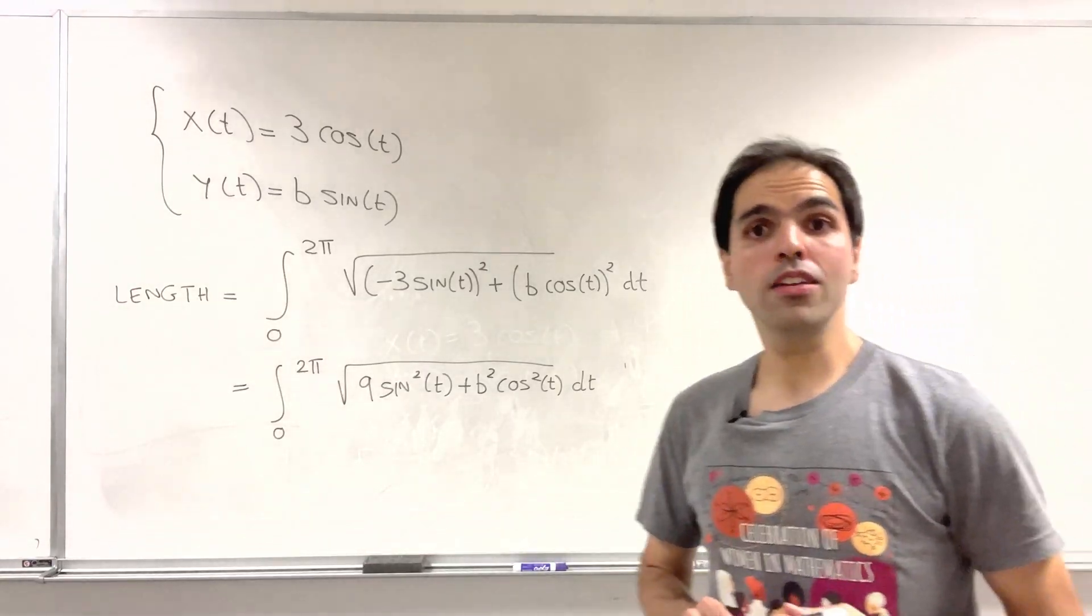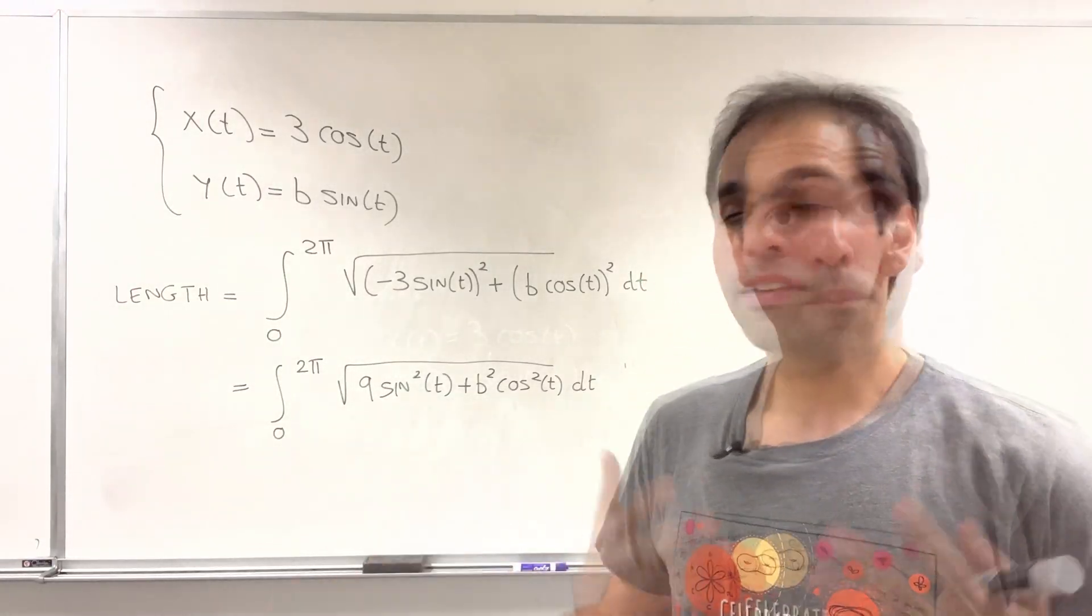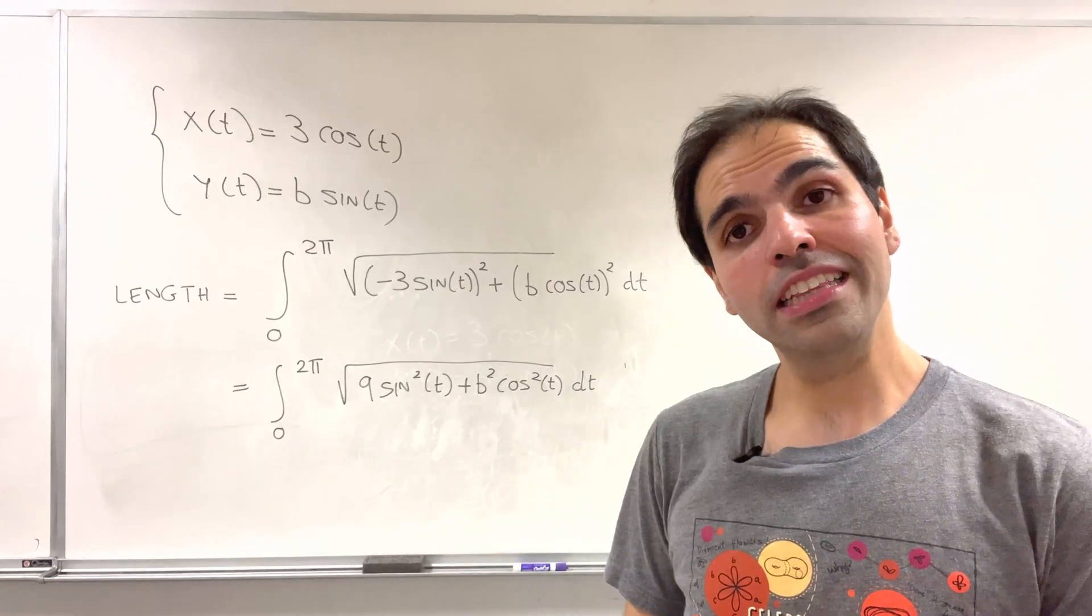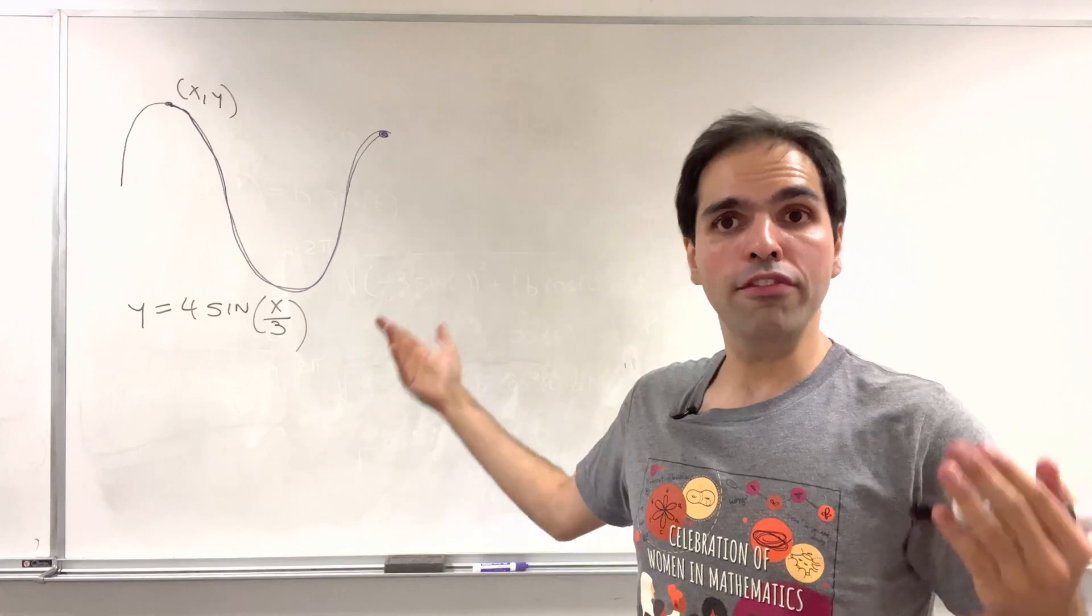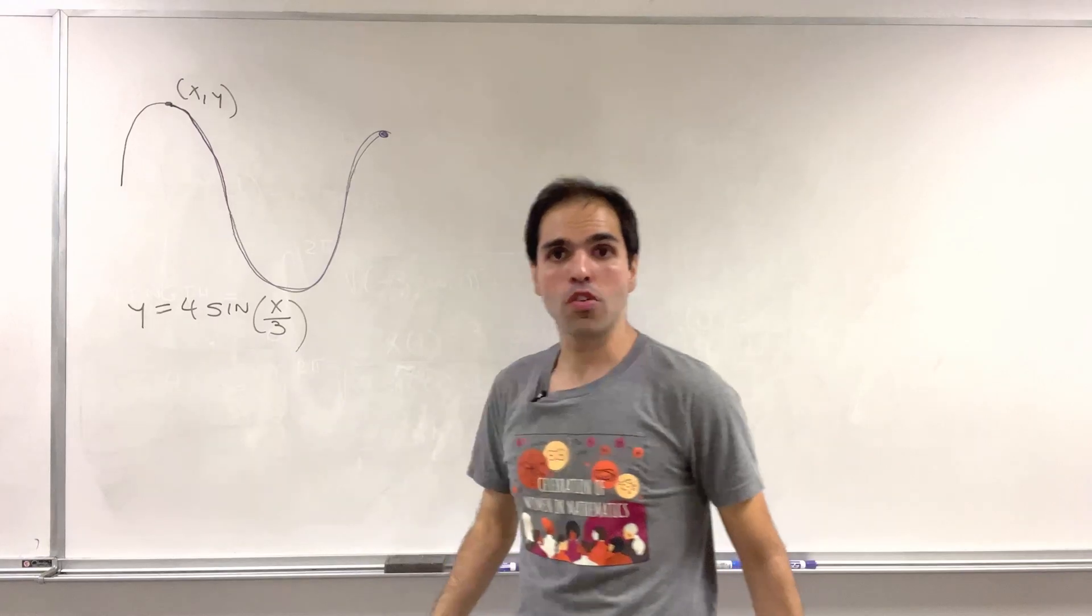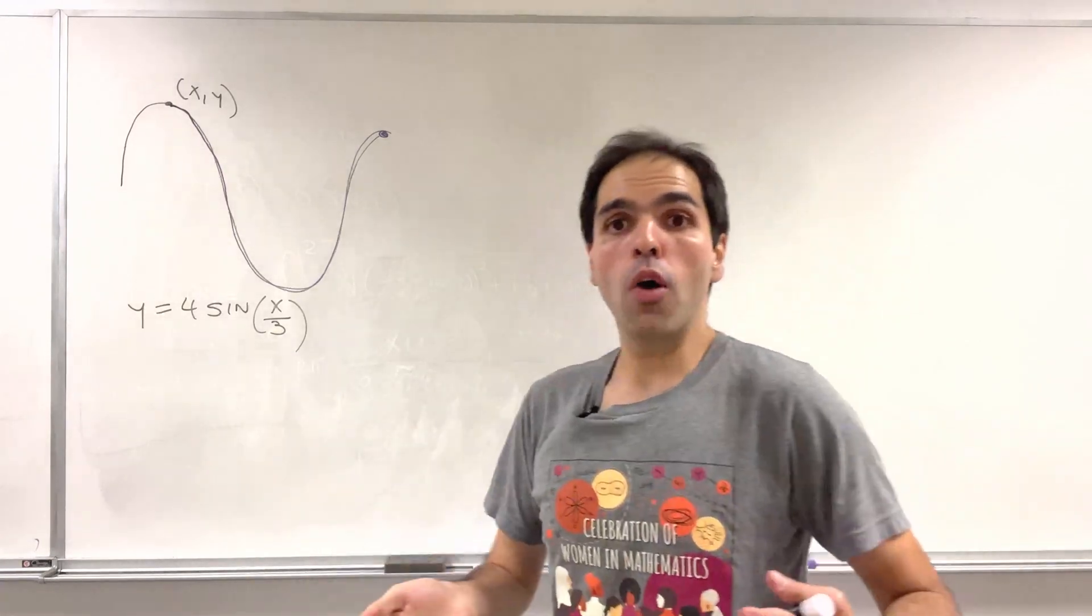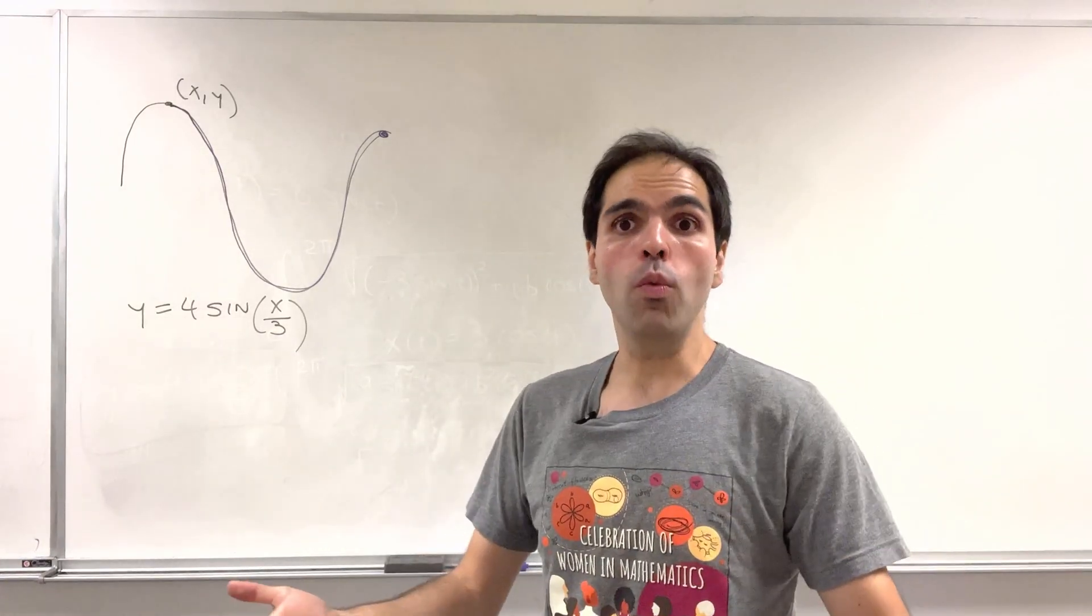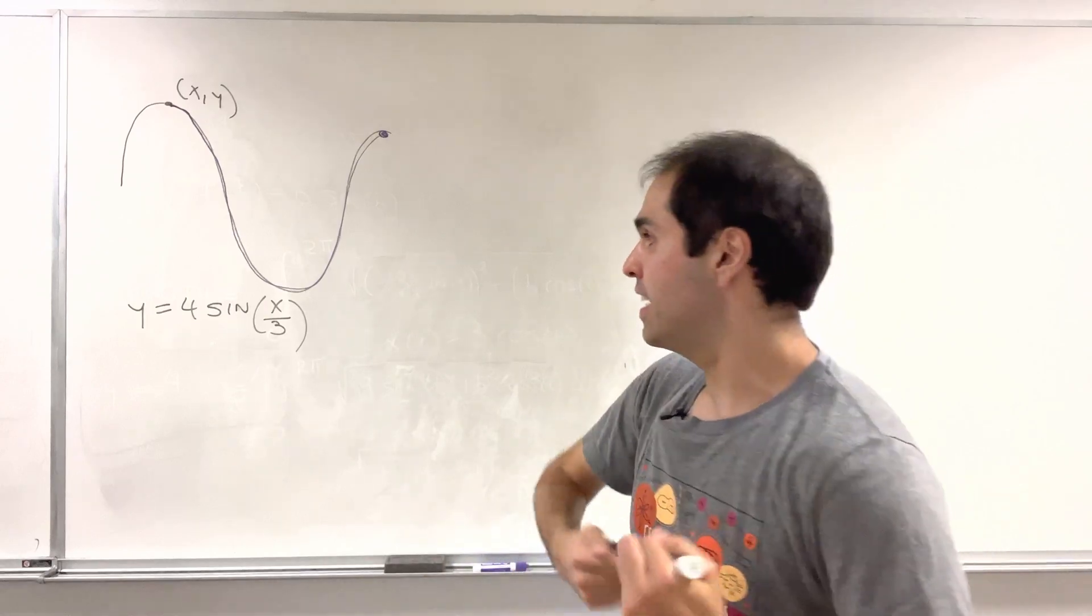Now keep that in mind, we will use this very soon. But now let's calculate the arc length in a different way. Because we do have that x comma y is on the graph of 4 sine of x over 3. So now we can just use the calc 1 way of calculating arc length,